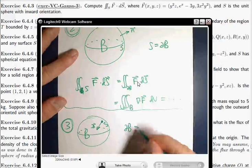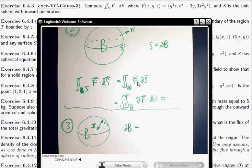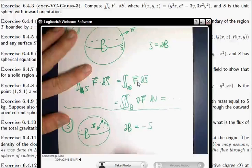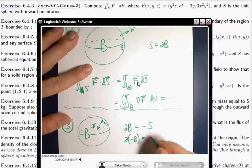And let's write that down. The boundary of the ball is, it's not S. It's S with a negative orientation. So it's negative S. Or said differently, the boundary of negative B is equal to S.